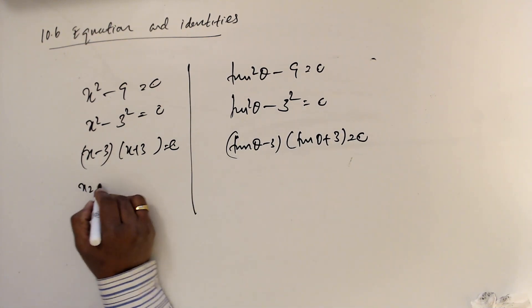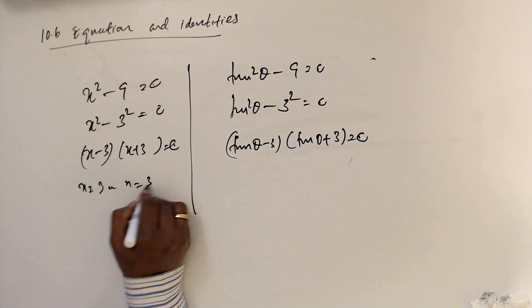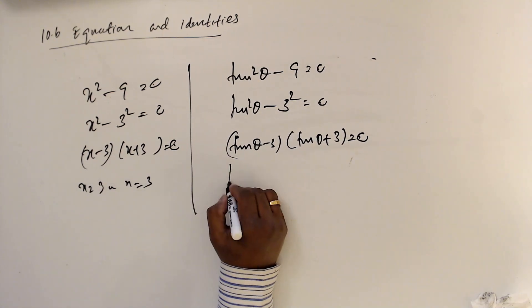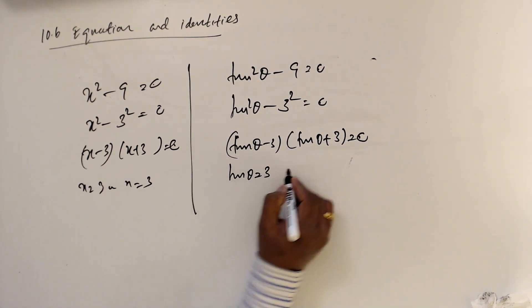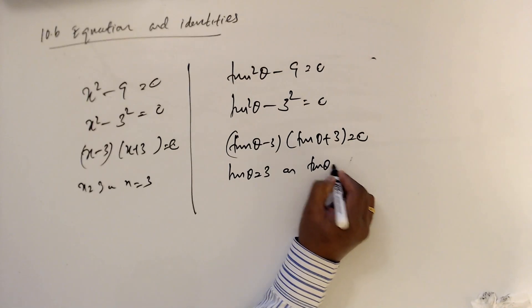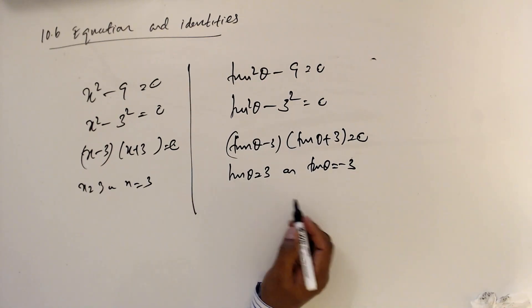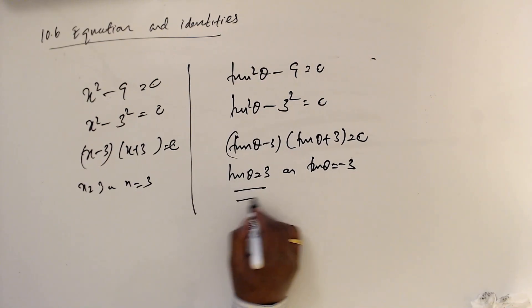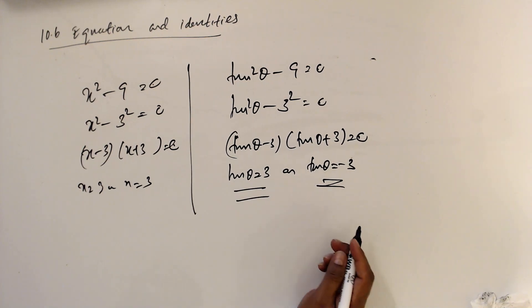So x equals 3 or x equals minus 3, which means tan theta equals 3 or tan theta equals minus 3. Then you know how to continue from here.